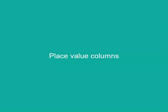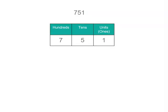Place value columns are also a good way to look at how we can break numbers up. And they're similar to number expanders, but you can write them in a table like this. So what we can see is that we have 7 hundreds, 5 tens, and 1 unit.